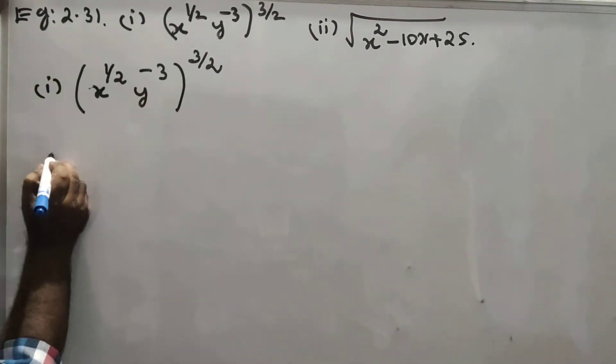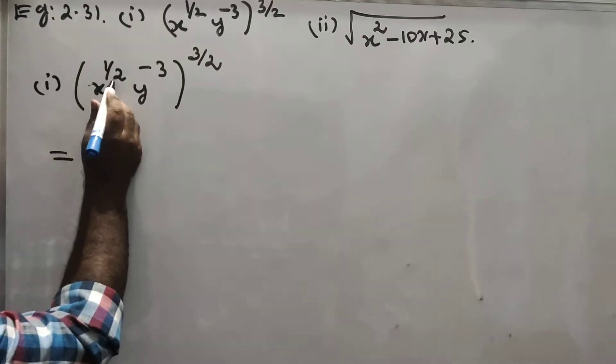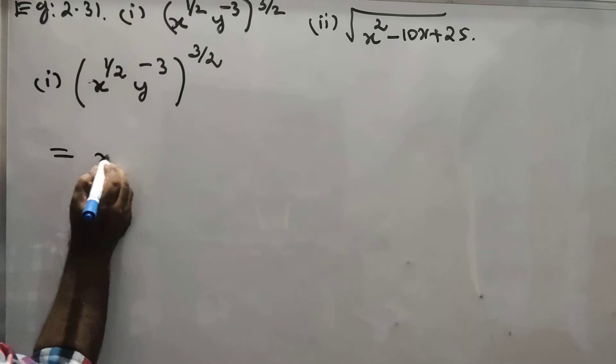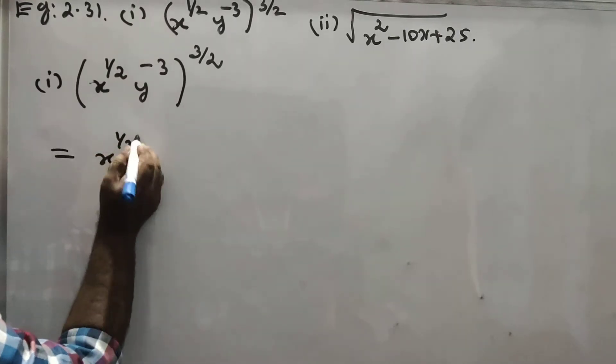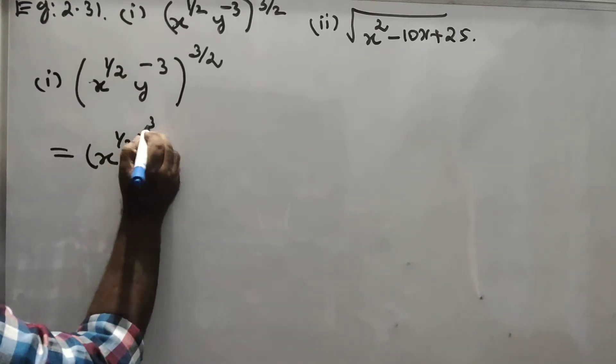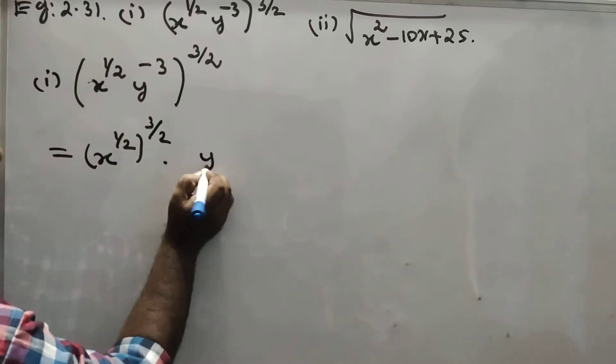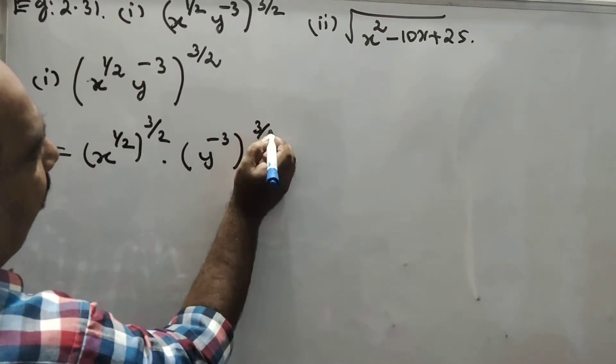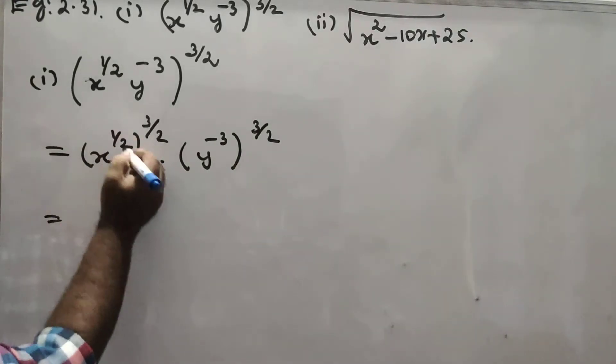So x power 1 by 2, the whole power 3 by 2, into y power minus 3, the whole power 3 by 2.